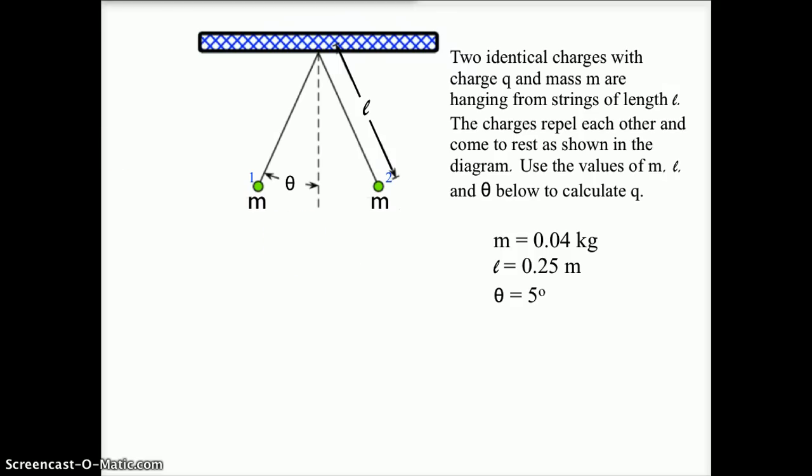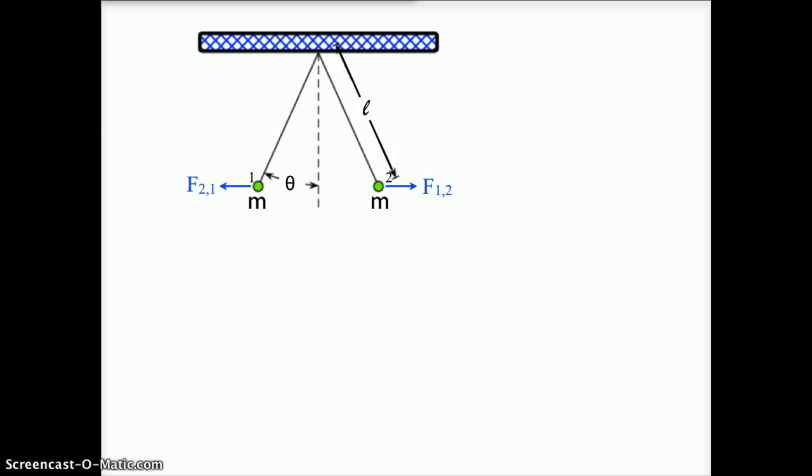So the first step, we want to think about what forces are acting. The two charges are going to repel each other with electric forces. So charge 2 is exerting an electric force on charge 1, pushing it to the left. Charge 1 is exerting an electric force on charge 2, pushing it to the right. There's also going to be a force of gravity on each charge, and there will be a force of tension along the string for each charge.